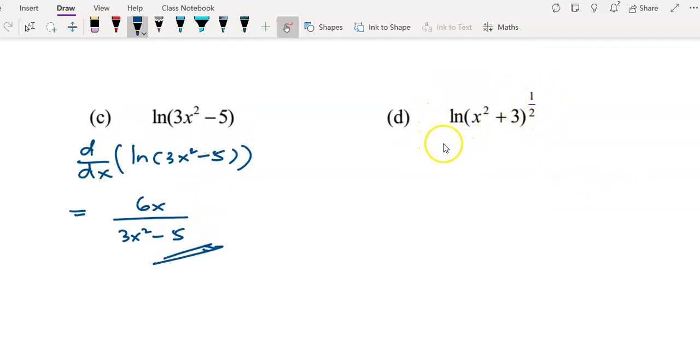For question (d), I will rewrite ln(x²+3)^(1/2) as (1/2)ln(x²+3). Applying the laws of logarithms, bringing the 1/2 to the front. To differentiate it, I write the symbol d/dx with the function.